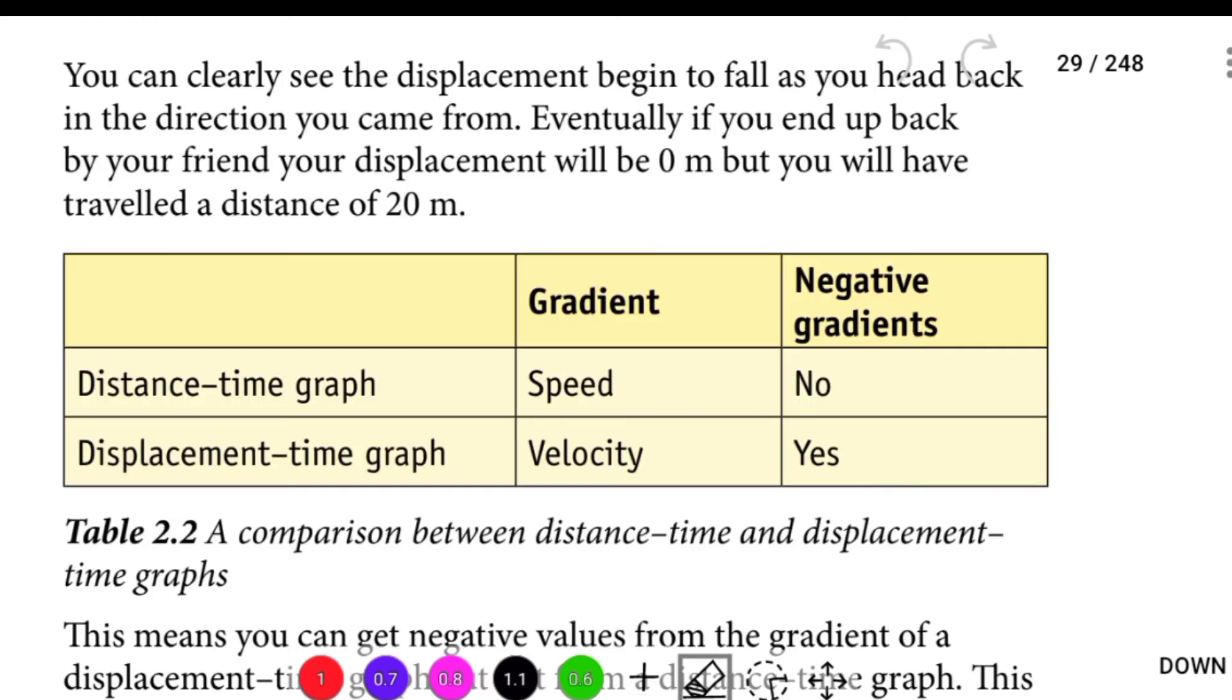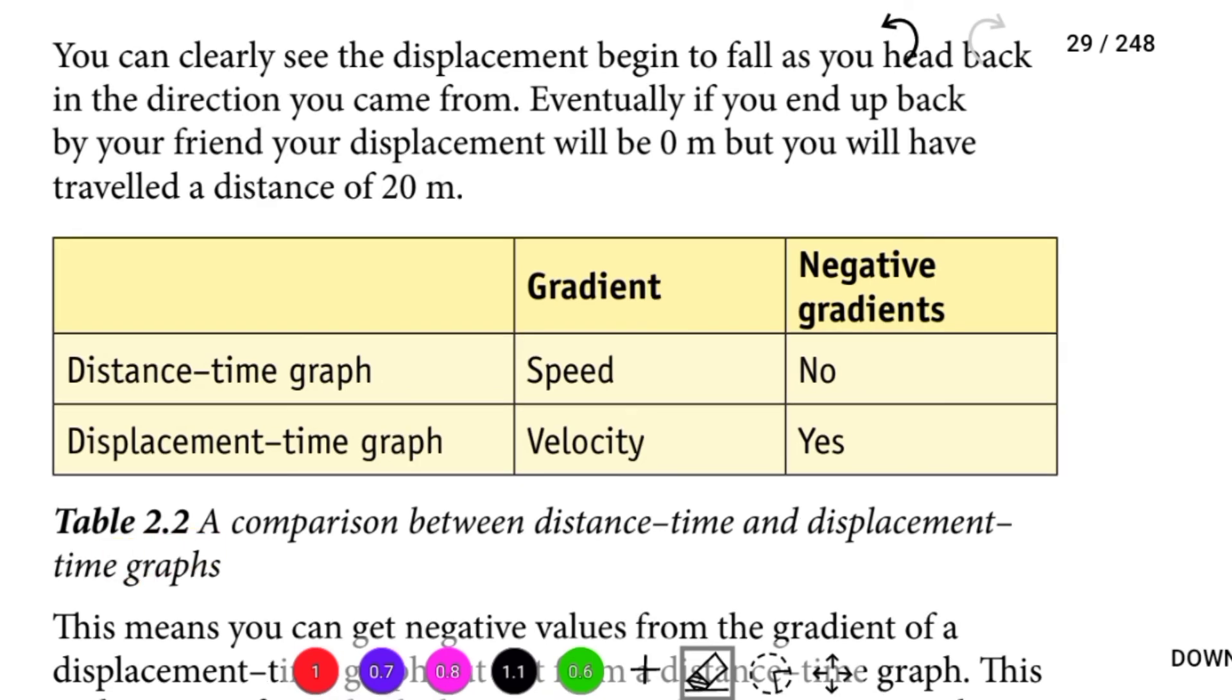Eventually, if you end up back by your friends, your displacement will be zero meters, but you will have traveled a distance of 20 meters. Table 2.2 shows a comparison between distance-time and displacement-time graphs.